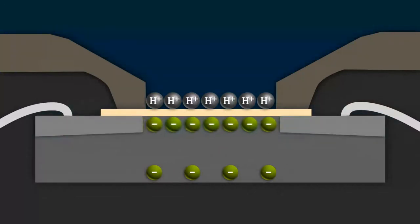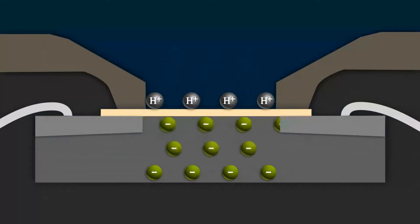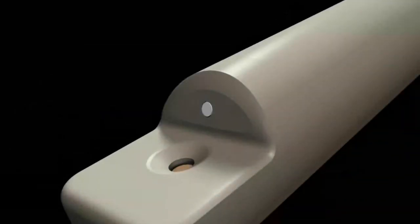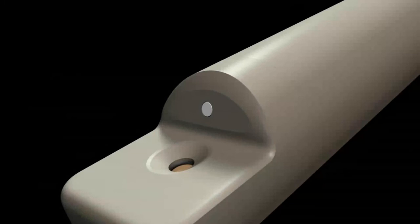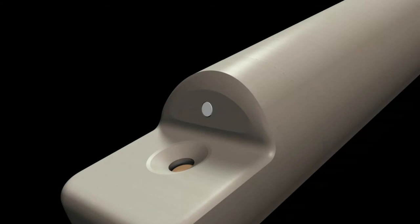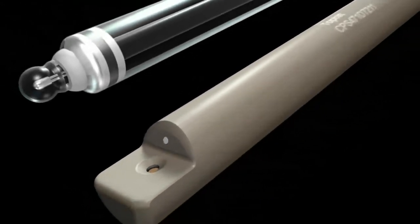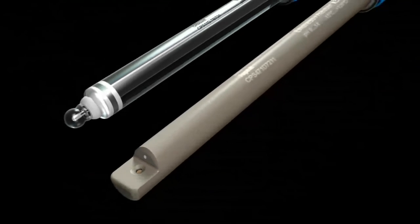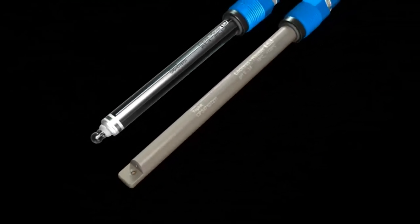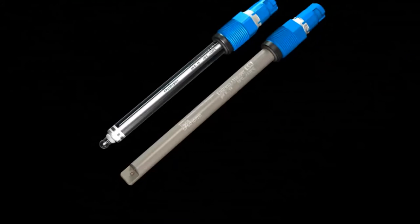The resulting flow of current is in direct proportion to the pH value of the media. Like glass sensors, the ISFET sensor also needs a stable reference potential. The potential that forms at the ISFET can then accurately be measured against it, with the reference system also protected from the measured solution by a junction. The potentiometric measuring principle enables highly accurate pH measurement for better product yields and less waste.